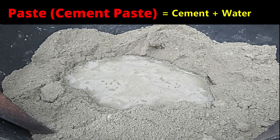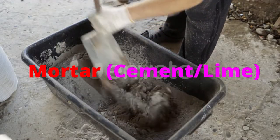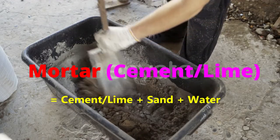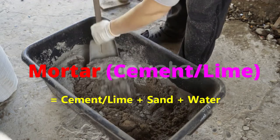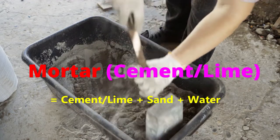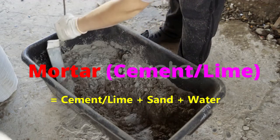Cement paste consists of cement and water. When cement is mixed with water we get cement paste. In case of mortar, it consists of cement, sand, and water. When cement or lime is mixed with sand and water, we get mortar.